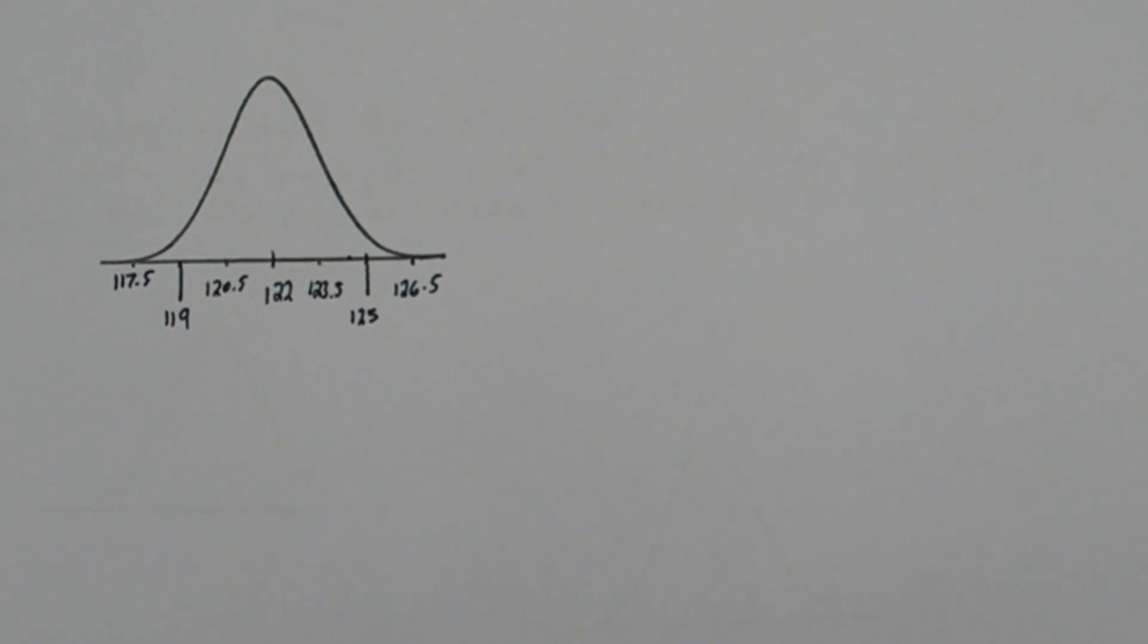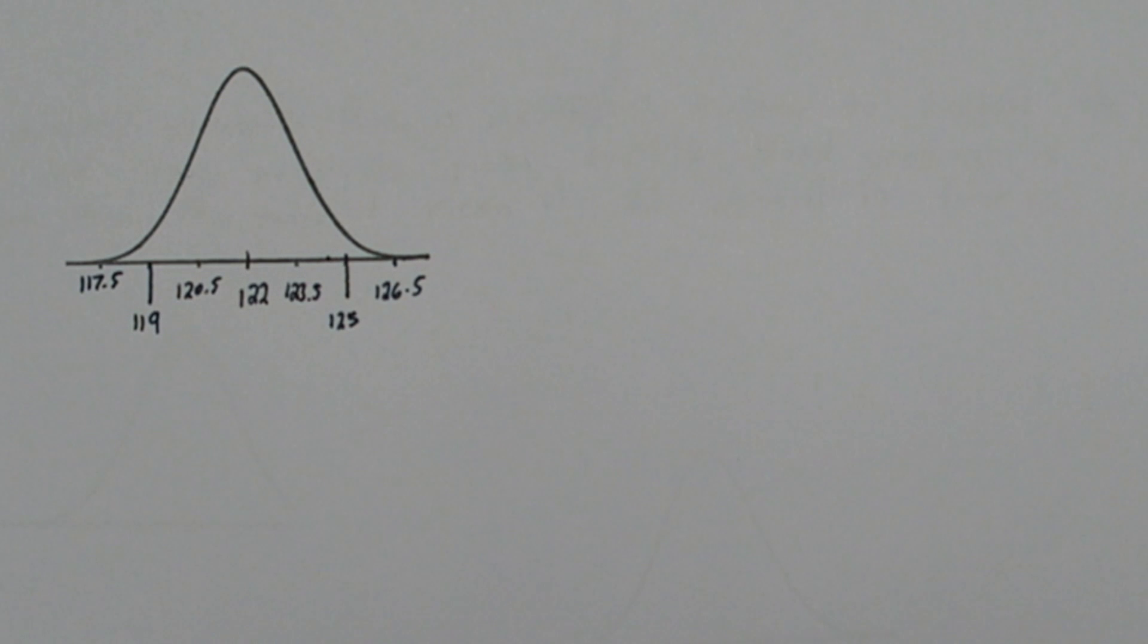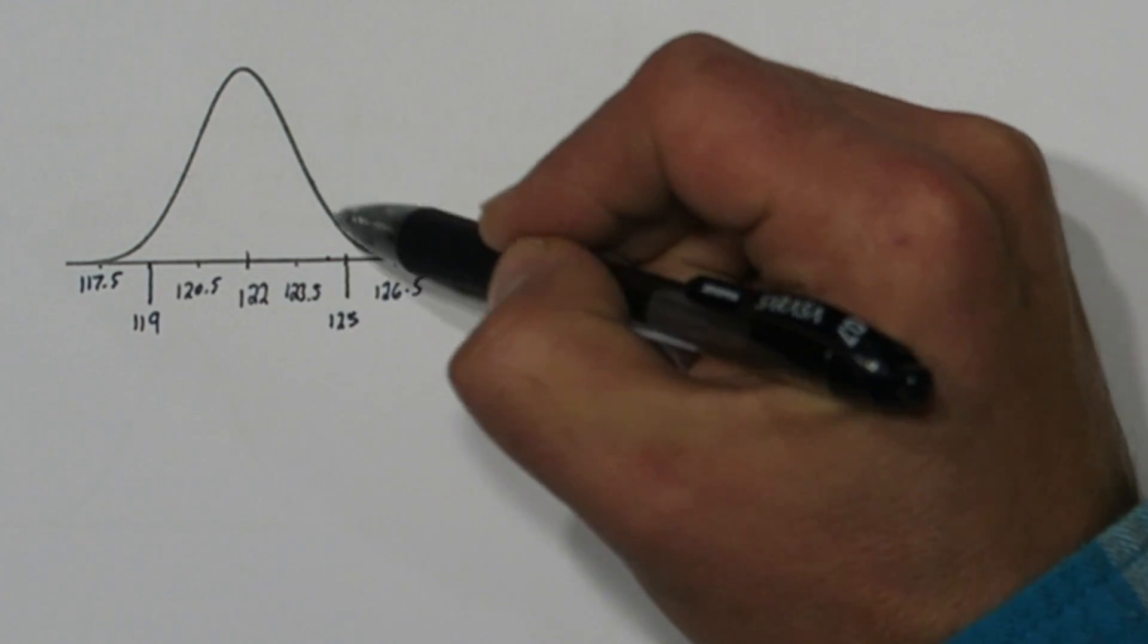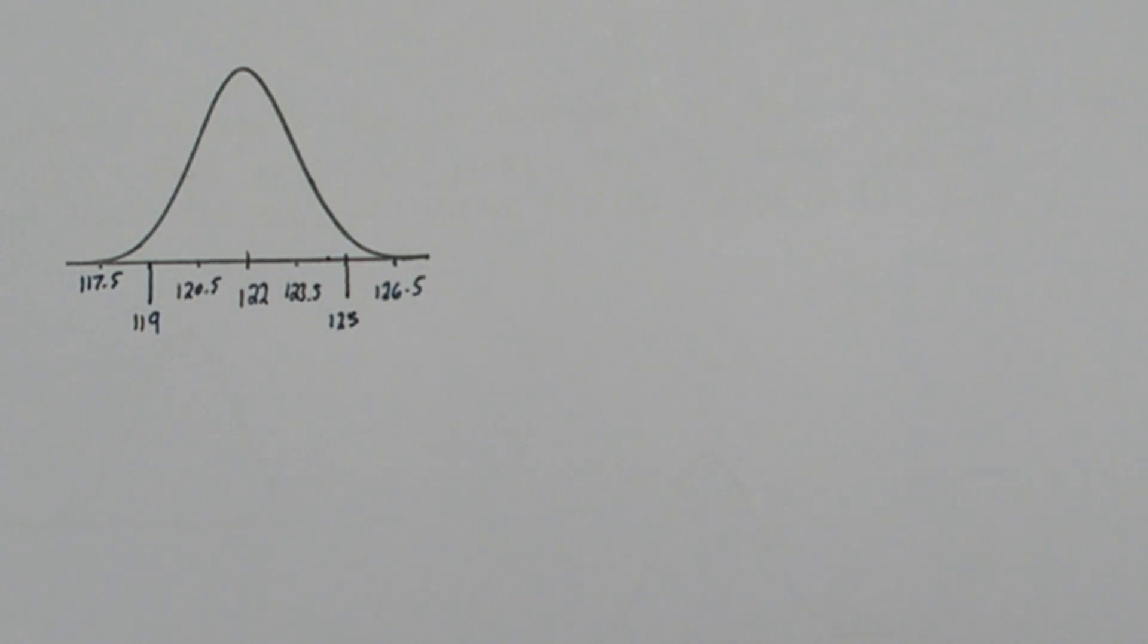Now the hypotheses given in the stem of the problem show this is a one-sided test. That means we're specifically interested in if this company's true mean systolic blood pressure is greater than 122, not if it's just different than 122, specifically if it's greater than. So if the alpha value is 0.05, we're interested in the highest 5% of the sampling distribution.